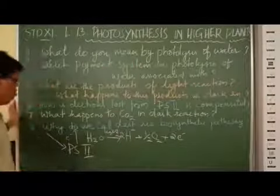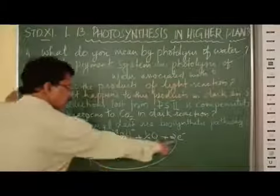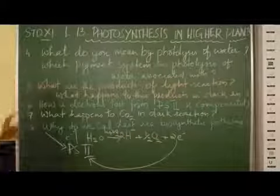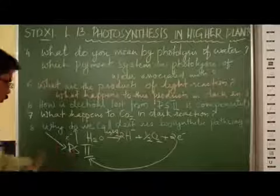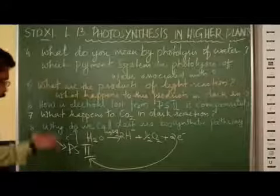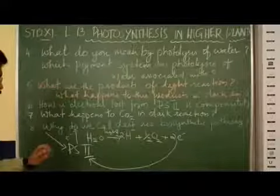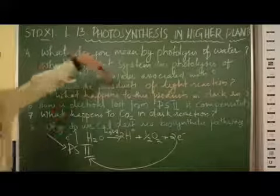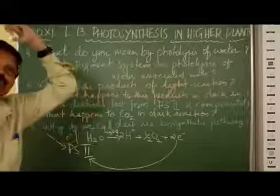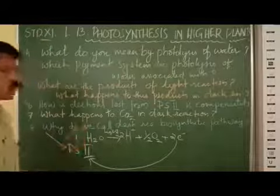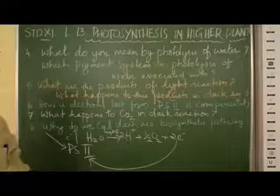The electron which is lost from pigment system 2 is formally accepted by the electron from water. So in non-cyclic photophosphorylation, it will go to pigment system 1 which accepts electrons from pigment system 2. When the light falls on it, high energy electrons are emitted. The electrons will now go to pigment system 1, and from pigment system 1 to NADP. So the electrons are lost from pigment system 2.